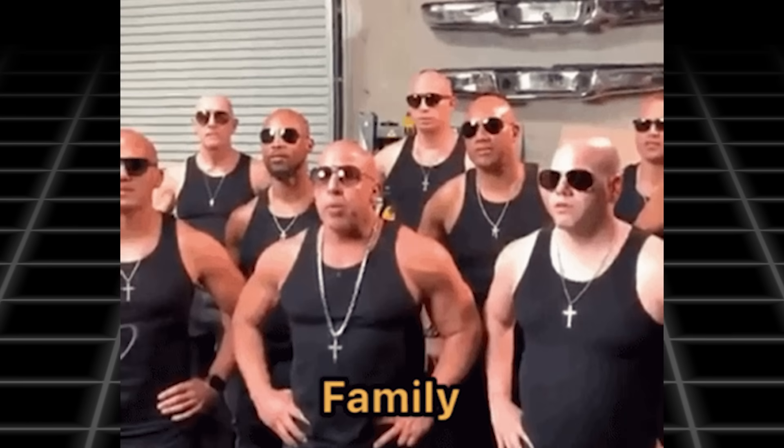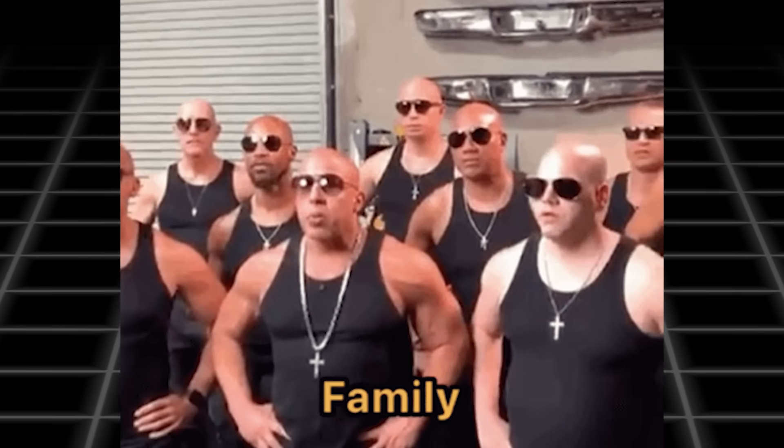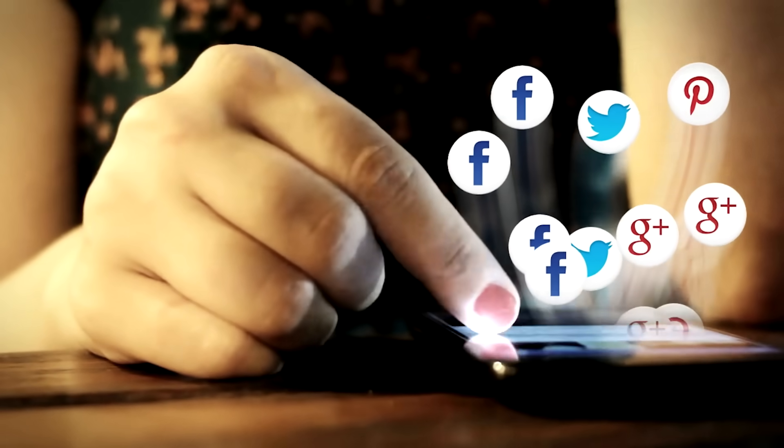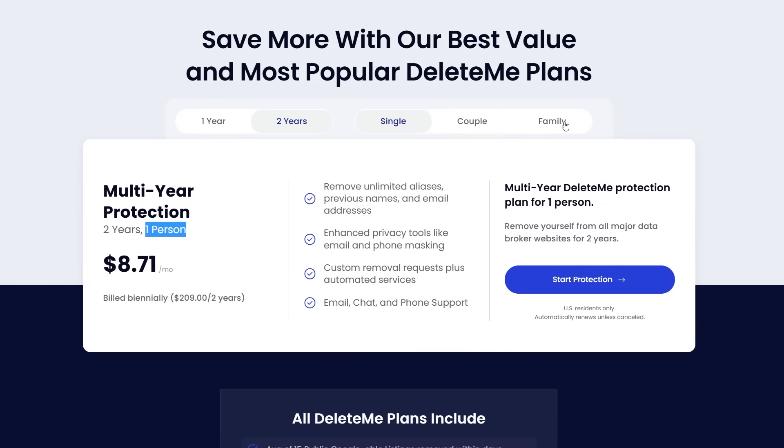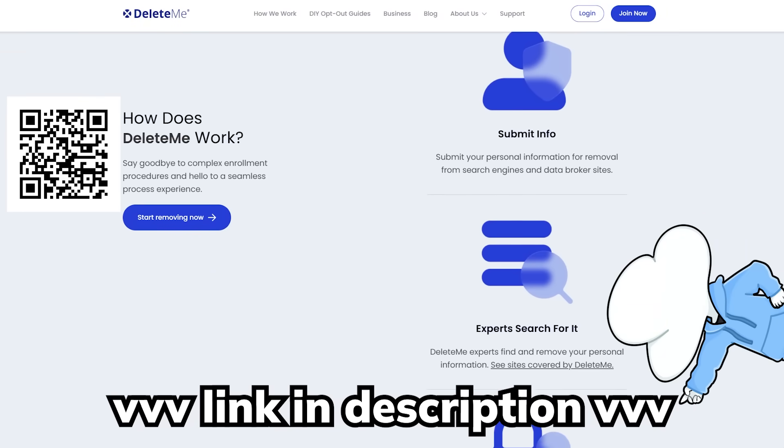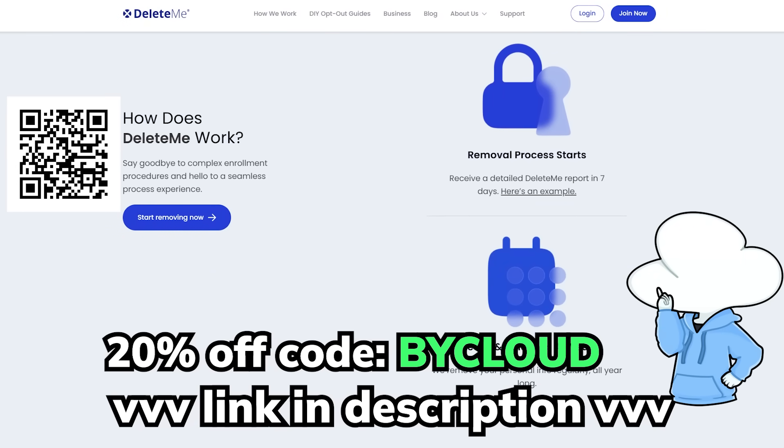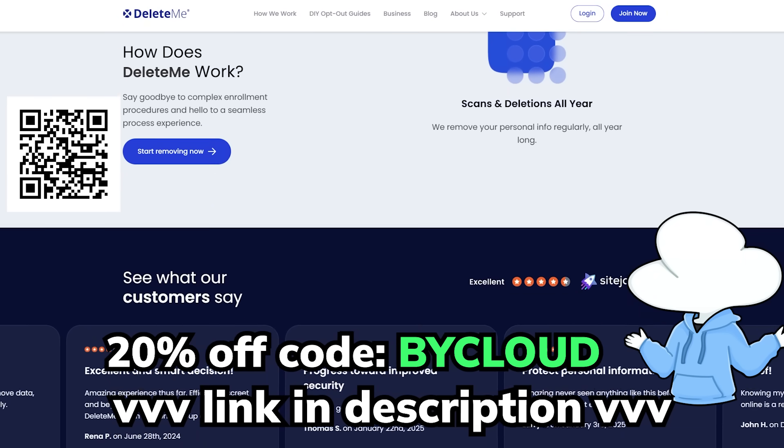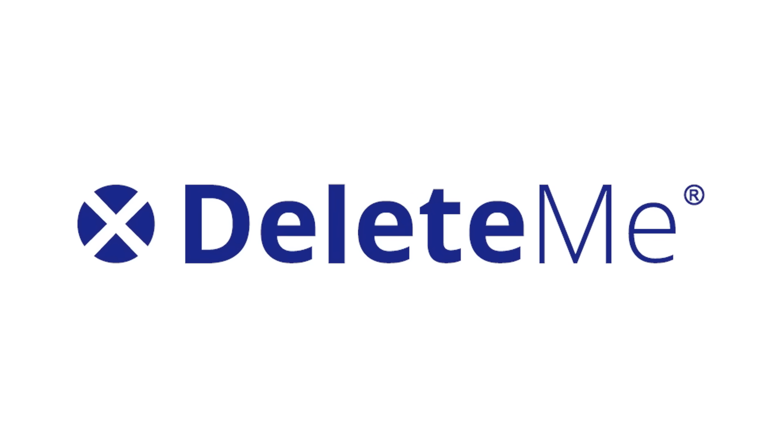So yeah, if you're serious about protecting your online privacy and want to keep your loved ones in the clear too because collecting data on your relatives has been easier than ever, definitely consider getting a family plan. You can start protecting your personal data with DeleteMe by clicking the link in the description below and use the coupon code BYCLOUD for 20% off. Don't wait until your personal data is exposed. And thank you DeleteMe for sponsoring this video.